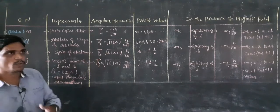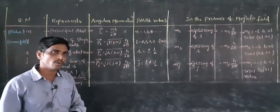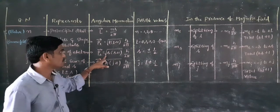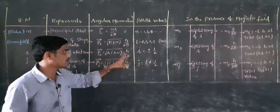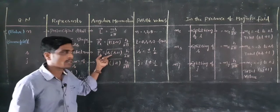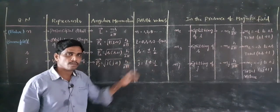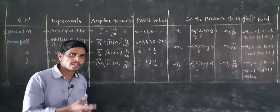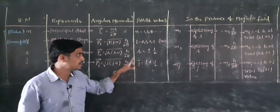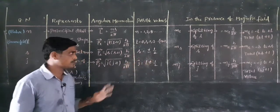Spin-based angular momentum expression: P_S̄ = √(S(S+1))·h/2π. S is the spin quantum number, which is either +½ or −½. Spin is either clockwise or anticlockwise. Clockwise spin corresponds to quantum number +½, and anticlockwise to −½.